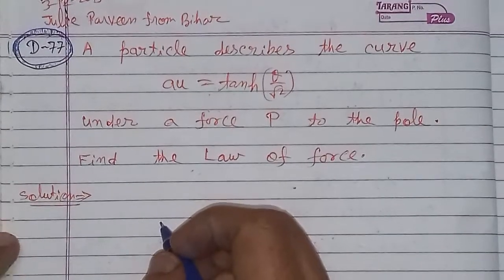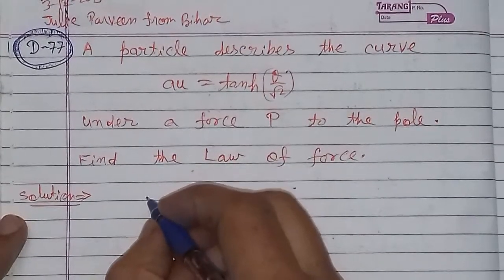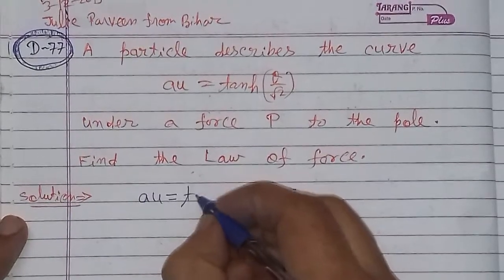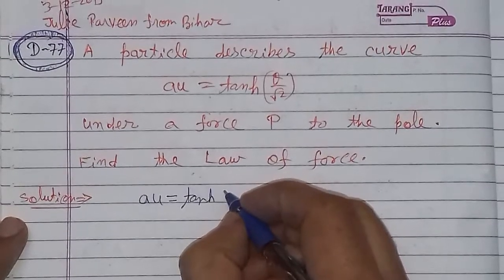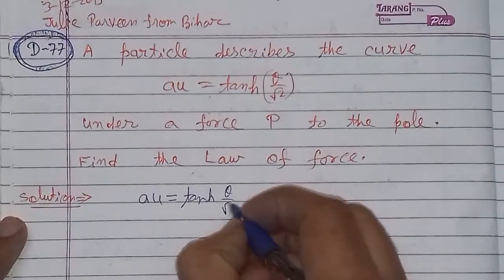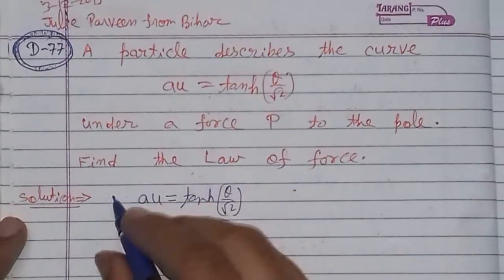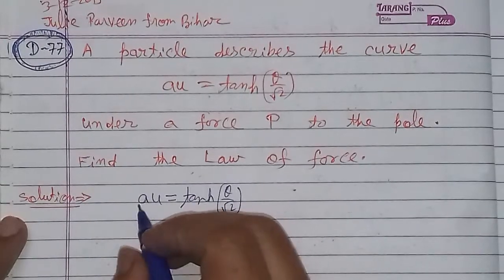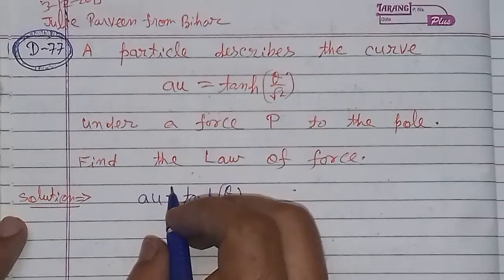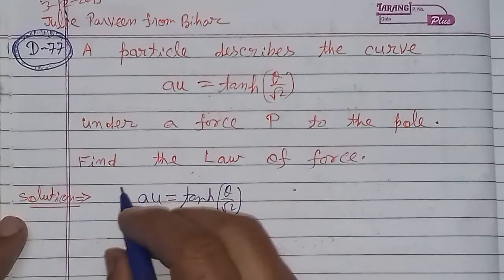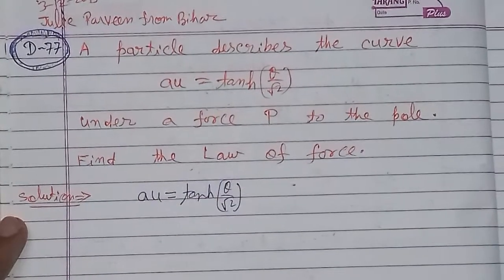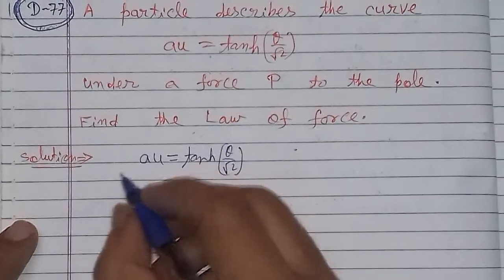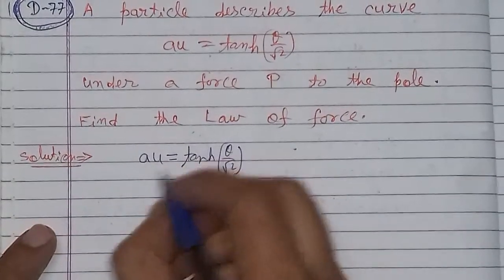Toh iska solution hai. Given equation of curve: u is equal to tan hyperbolic theta upon square root 2. Sabse pehle hum isko theta ki respect mein u ka do baar differentiation karenge. Kyunki hum log jantay hain central equation, differential equation of central force ka equation. Uske liye u ke first and second derivative ki zaroorat hoti hai. Iske liye isko ek baar differentiate karenge theta ke respect mein pehle.